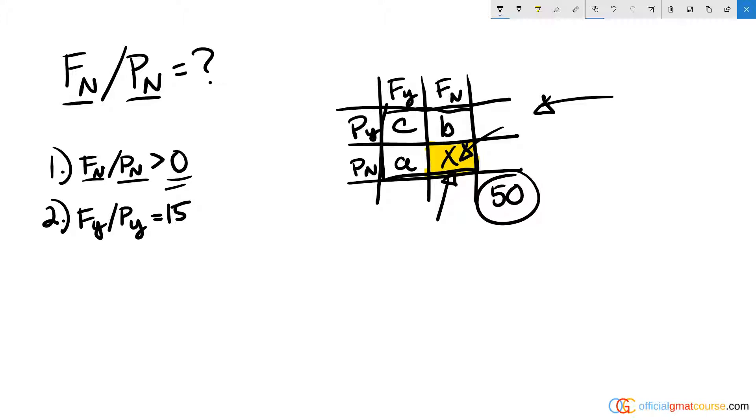Statement two on its own says P yes F, F yes, so the overlap which is C in our situation is 15. Well that doesn't tell me anything about these other three quadrants except that together they add up to 35. So I definitely can't isolate x; that's insufficient.